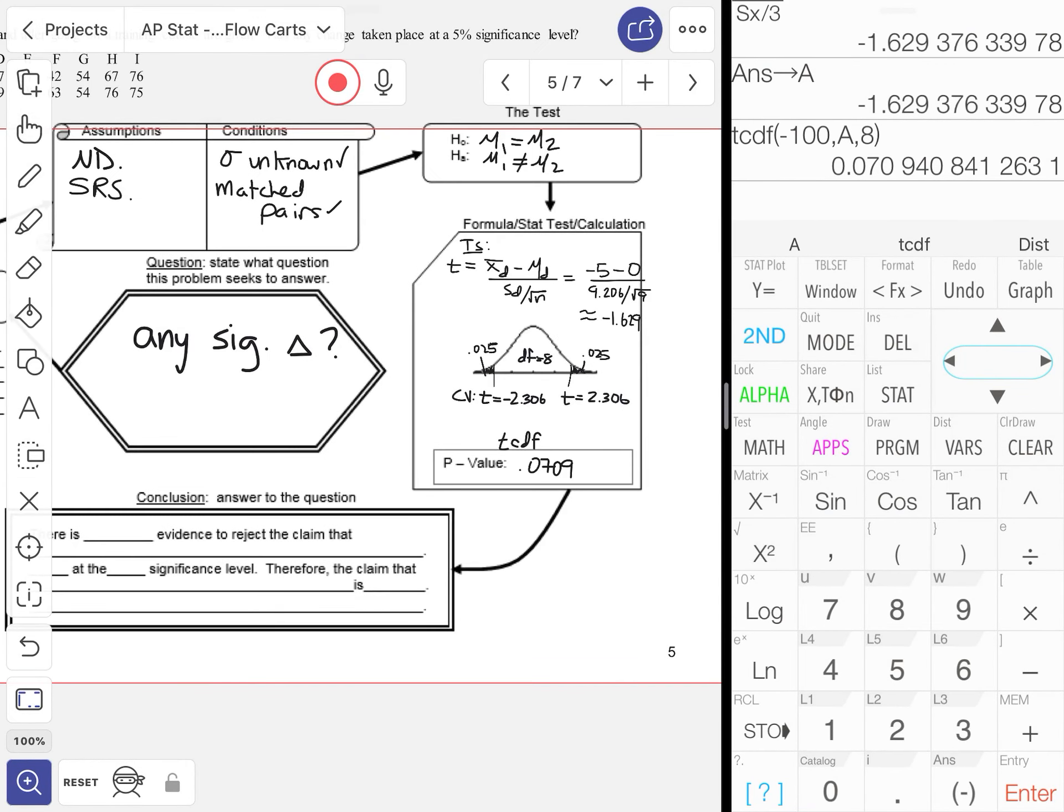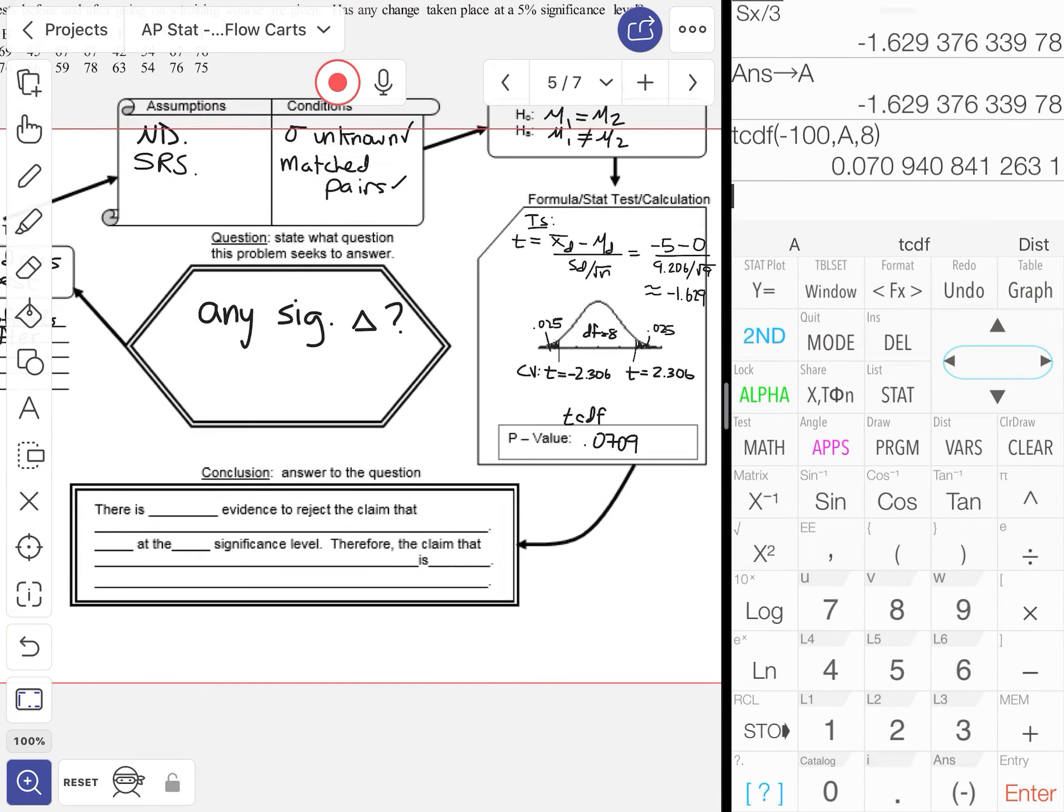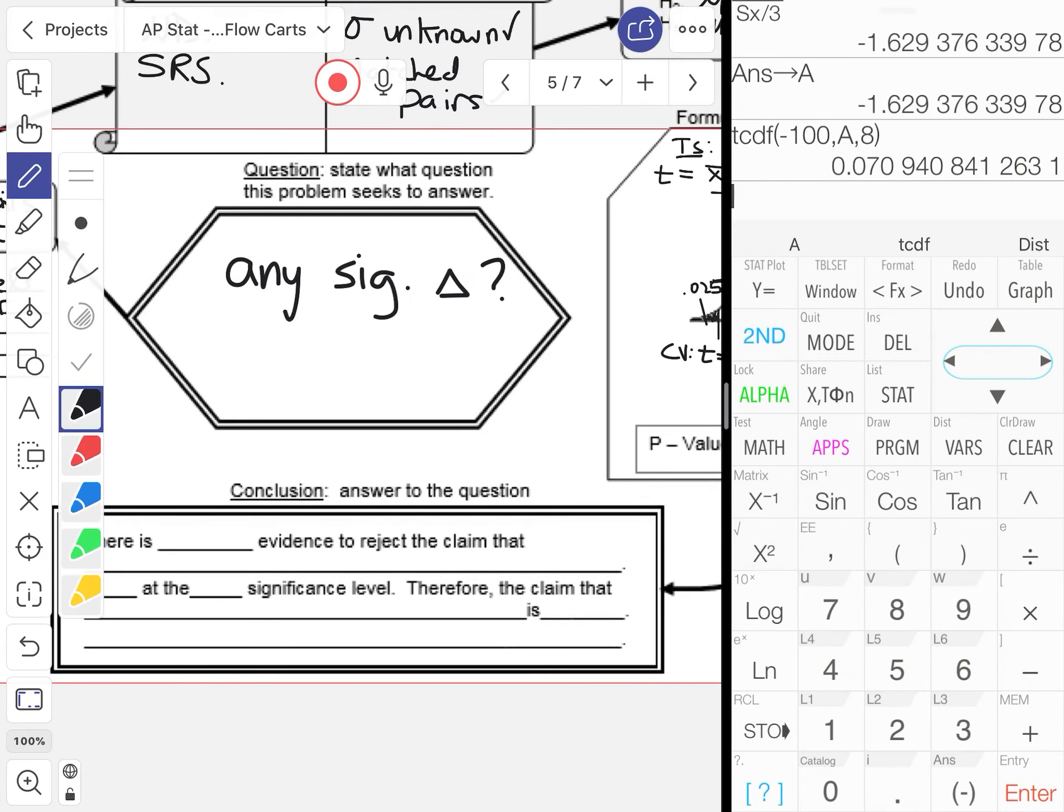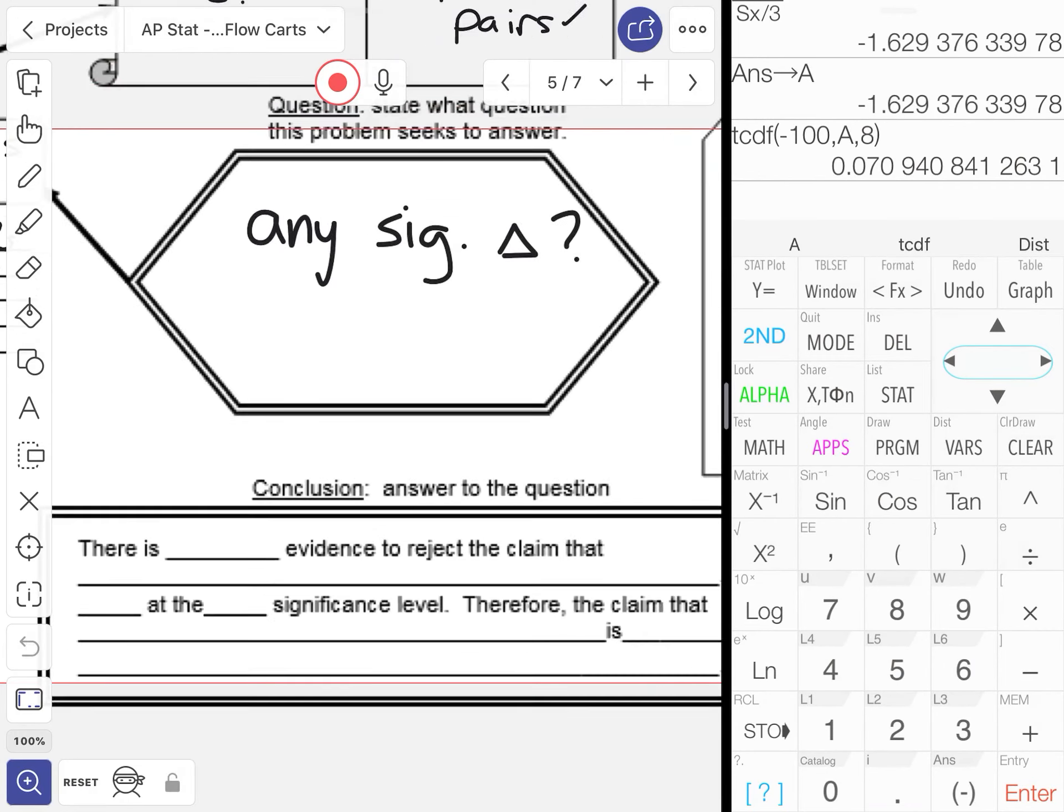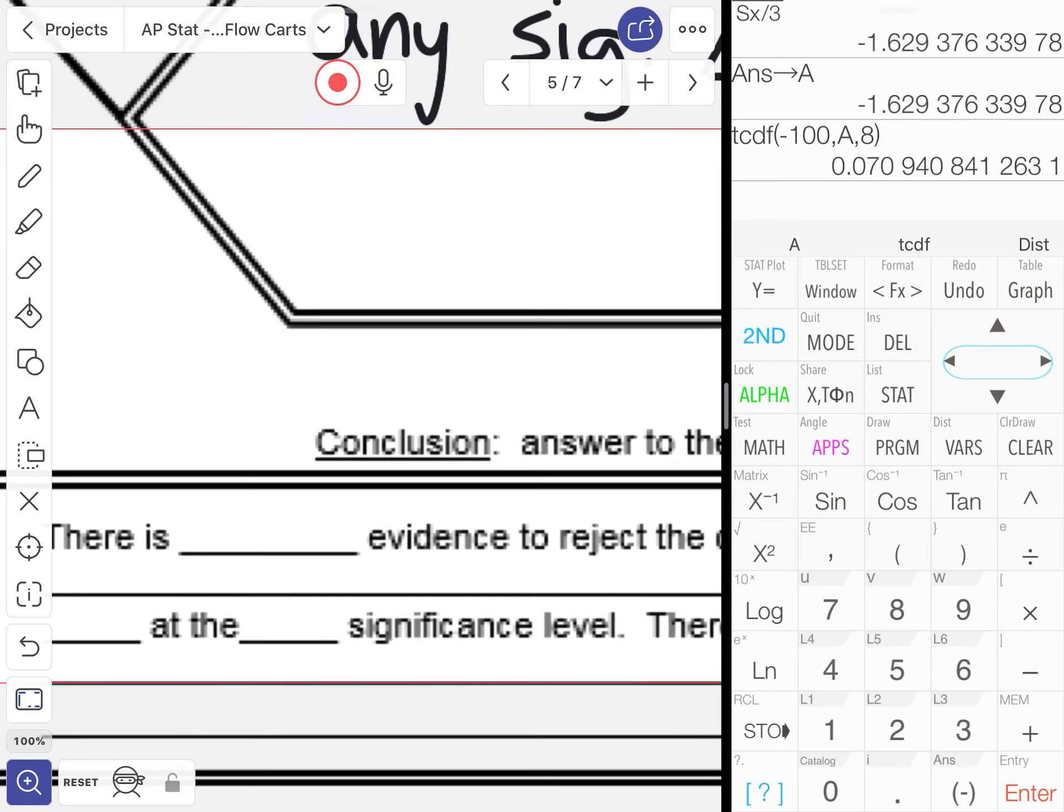All right, so in either case we're getting across the idea that we should not be rejecting the null hypothesis, because the negative 1.629 does not fall in the shaded area and the 0.0709 is not less than the stated alpha value of 0.05.